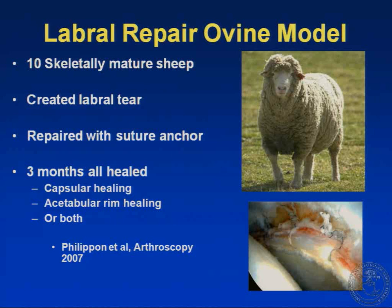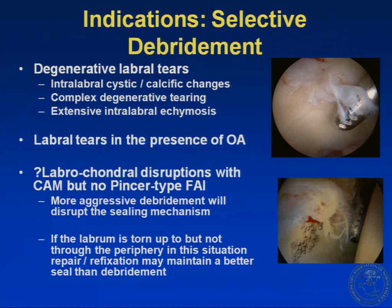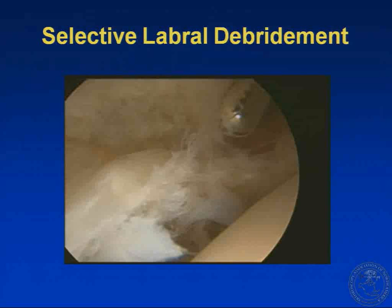With respect to indications — these are my indications and by no means the standard. My indication for selective labral debridement is a degenerative labral tear with either intralabral cystic or calcific changes, complex degenerative tearing, or extensive intralabral ecchymosis. Labral tears in the presence of degenerative changes, and a labral-chondral disruption with cam but no pincer-type FAI, can be managed with an articular-sided labral debridement. However, I would be careful because sometimes the tear will extend to the periphery but not through it, leaving very little labrum, which can disrupt the seal — and in some situations a refixation may better maintain the seal.